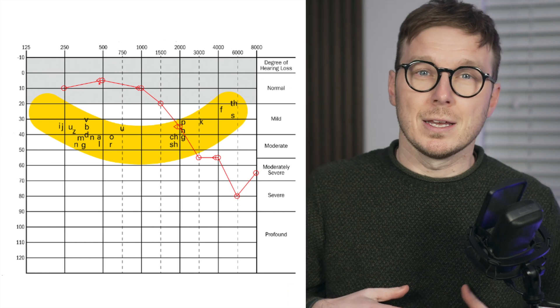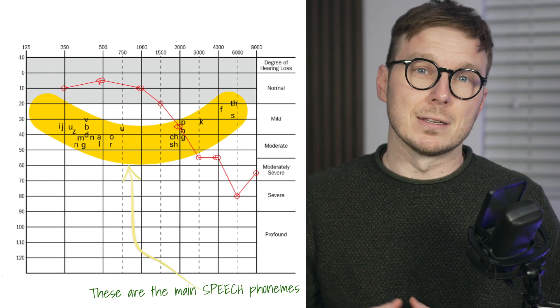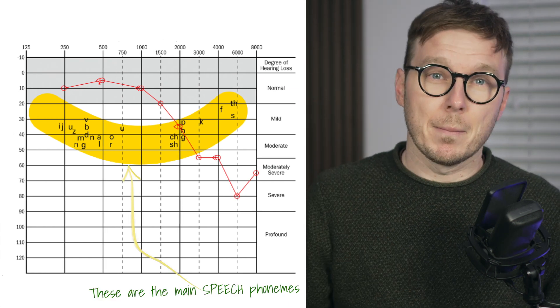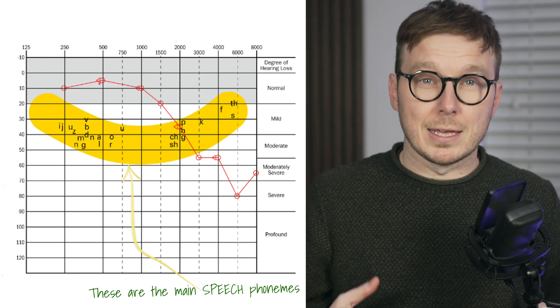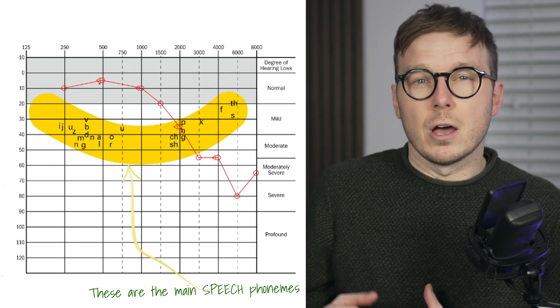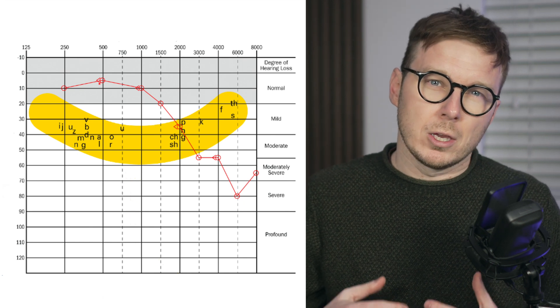So why these specific frequencies? Well, we test these frequencies in particular because they cover the key sounds needed for understanding speech. Most human speech falls between 250 hertz and 8,000 hertz. So this range gives us a good idea of how well you hear spoken words. If you've missed certain pitches, it can affect how clearly you understand conversation.